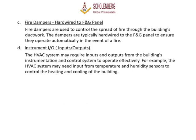C. Fire dampers hardwired to F&G panel: Fire dampers are used to control the spread of fire through the building's ductwork, and are typically hardwired to the F&G panel to ensure they operate automatically in the event of a fire. D. Instrument I/O: The HVAC system may require inputs and outputs from the building's instrumentation and control system to operate effectively. For example, the HVAC system may need input from temperature and humidity sensors to control the heating and cooling of the building.